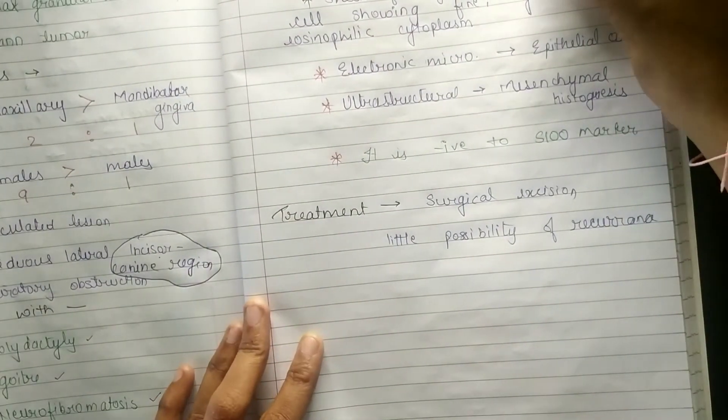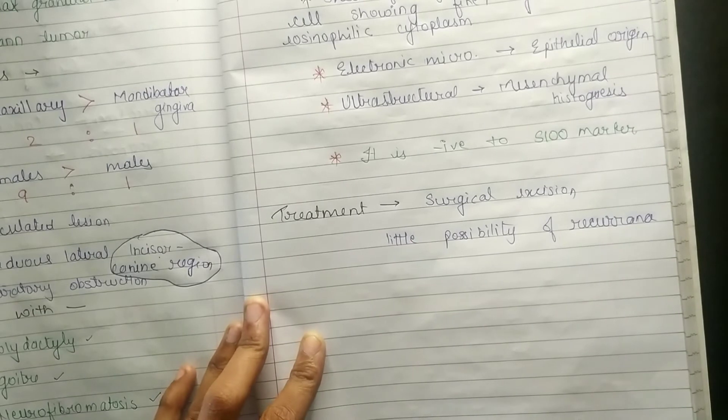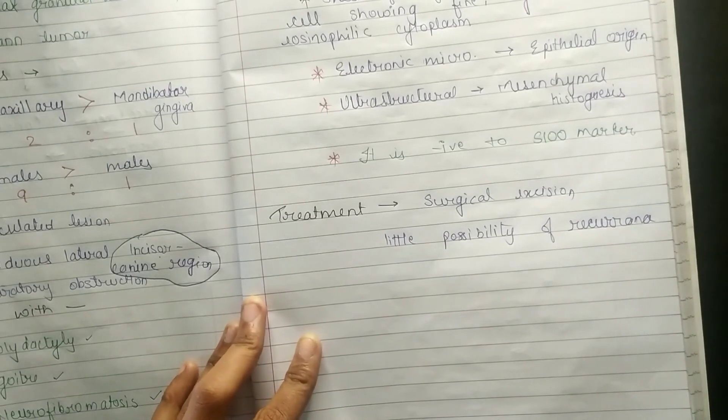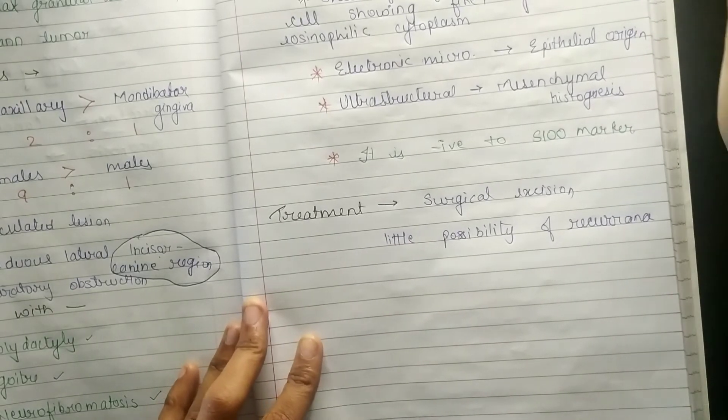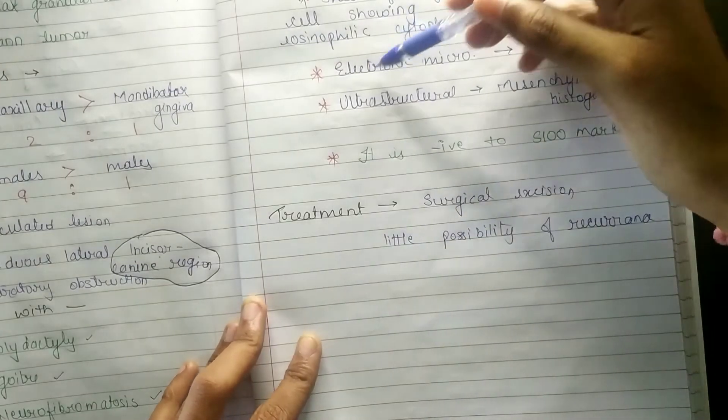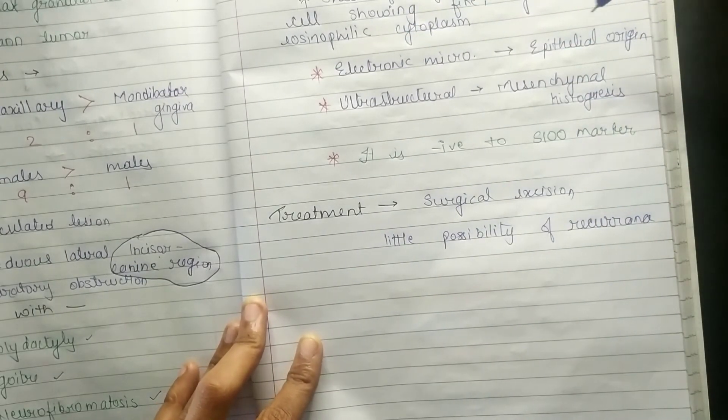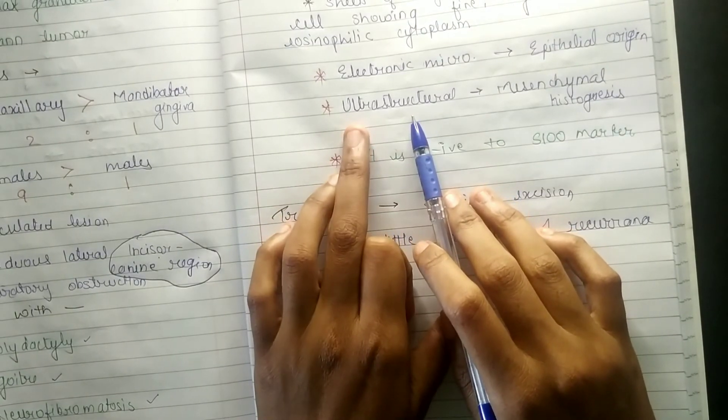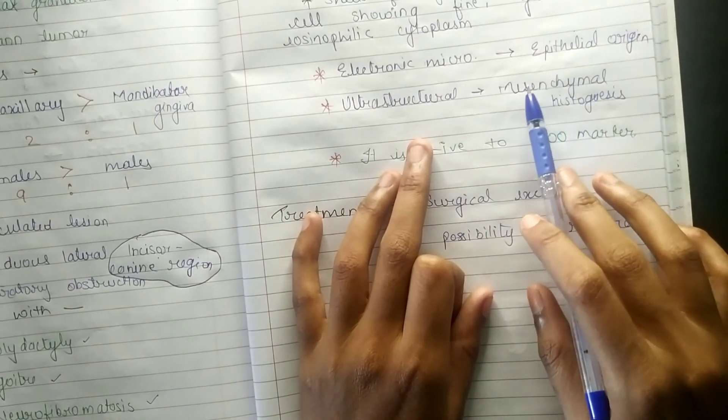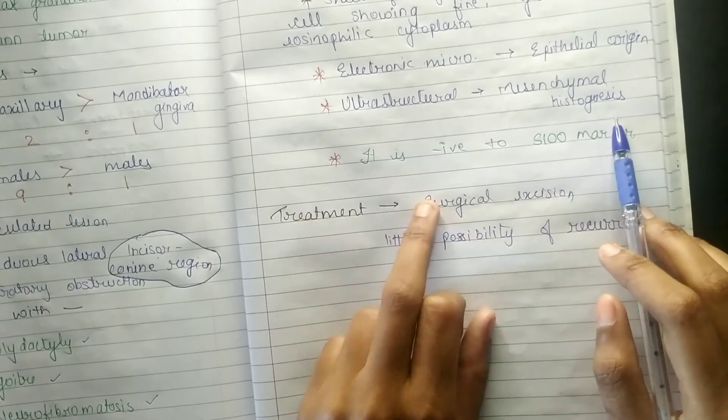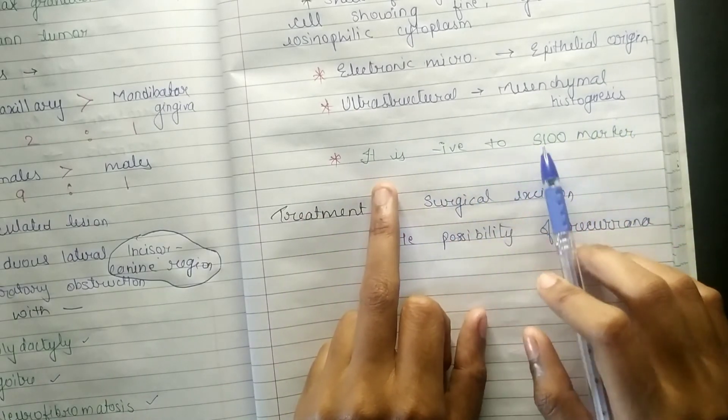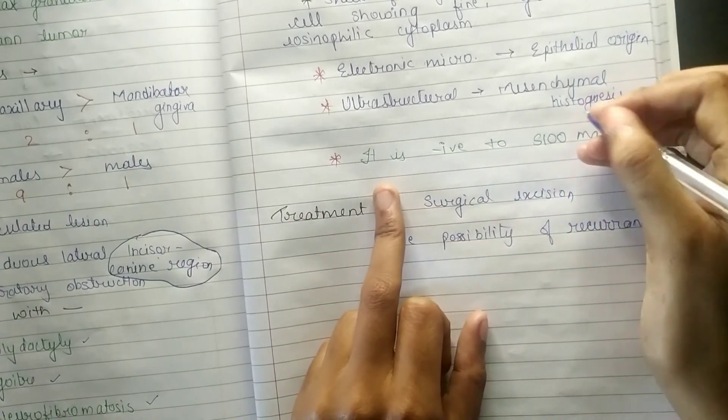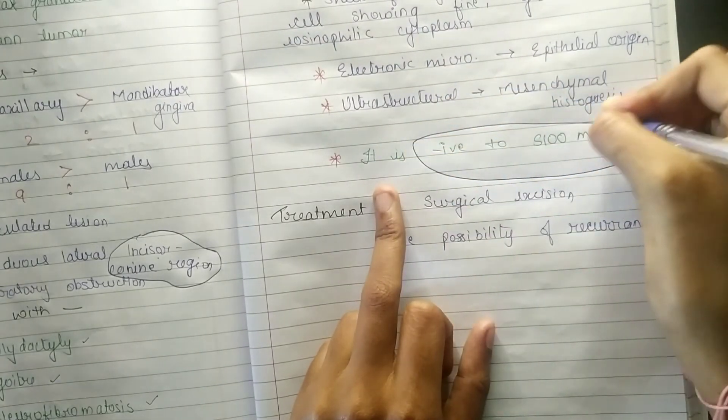If we talk about histological features, there are numerous capillaries and sheets of large closely packed cells showing fine granular eosinophilic cytoplasm. In electron microscopy there is epithelial origin, but in ultrastructure findings it is of mesenchymal histogenesis. It is negative to S100 marker. Now this is a question of viva.